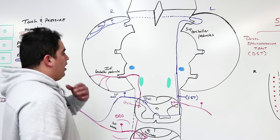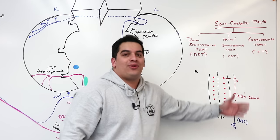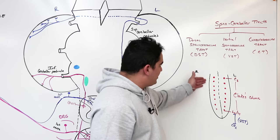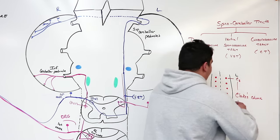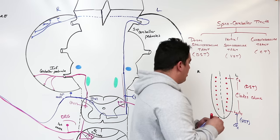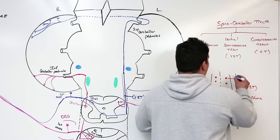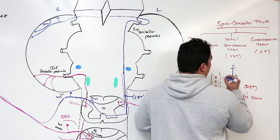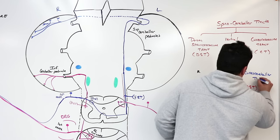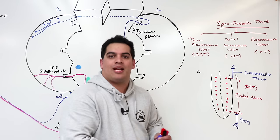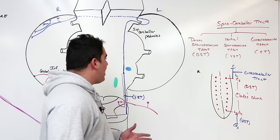Now the cuneocerebellar tract. Since DST covers C8 to L2-L3, and VST covers below L2-L3, it makes sense that anything above C8 — up to C1 — is the cuneocerebellar tract. This tract mainly picks up proprioception, touch, and pressure from the upper limbs and the head and neck structures.